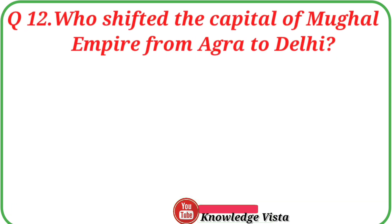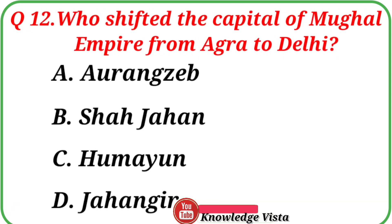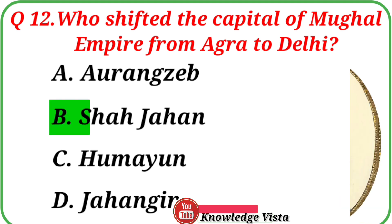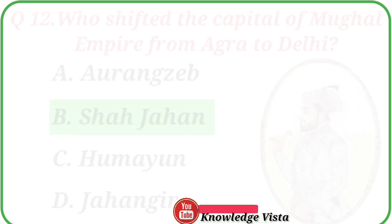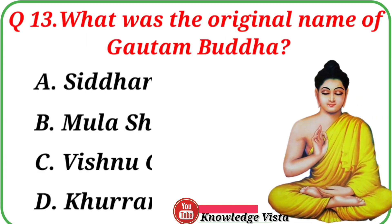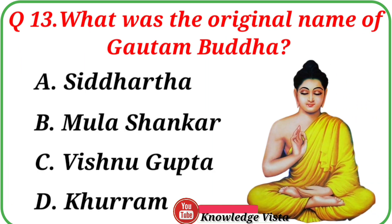Question number twelve: Who shifted the capital of the Mughal Empire from Agra to Delhi? Your options are: A. Aurangzeb, B. Shah Jahan, C. Humayun, D. Jahangir. Correct answer is option B, Shah Jahan.